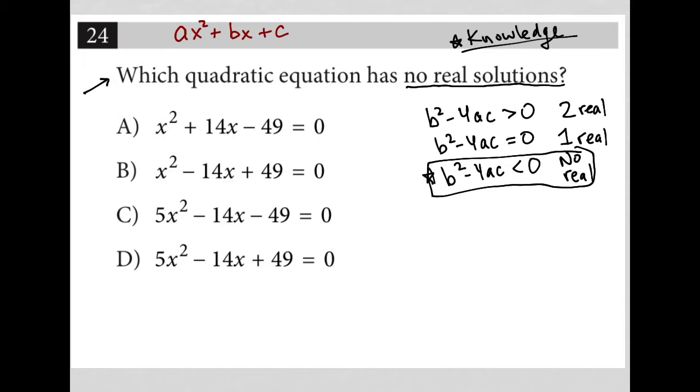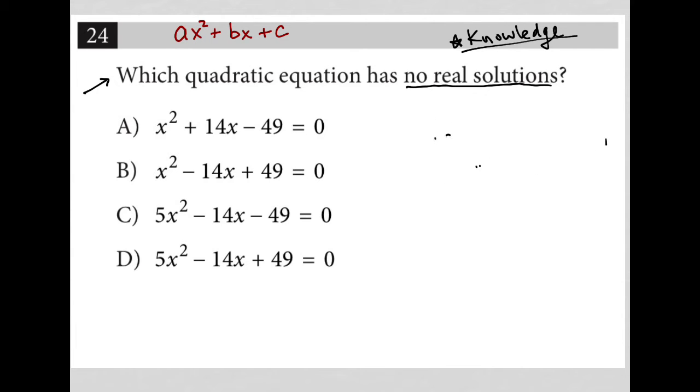So for, let's see, let's erase all this for now. I'll rewrite this. So for choice A, b squared would be 14 squared minus 4 times a is 1, right? Because there's nothing in front of x squared. So that's like an invisible 1 coefficient. And c is negative 49. And we can just do the math there. And even without doing the math, to be honest, I can see whatever this is, 14 squared, which I think is like 256 or something like that.